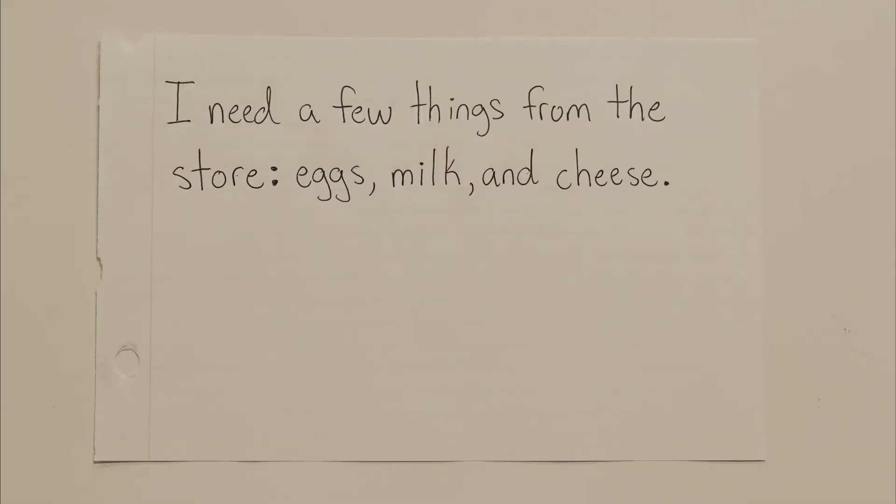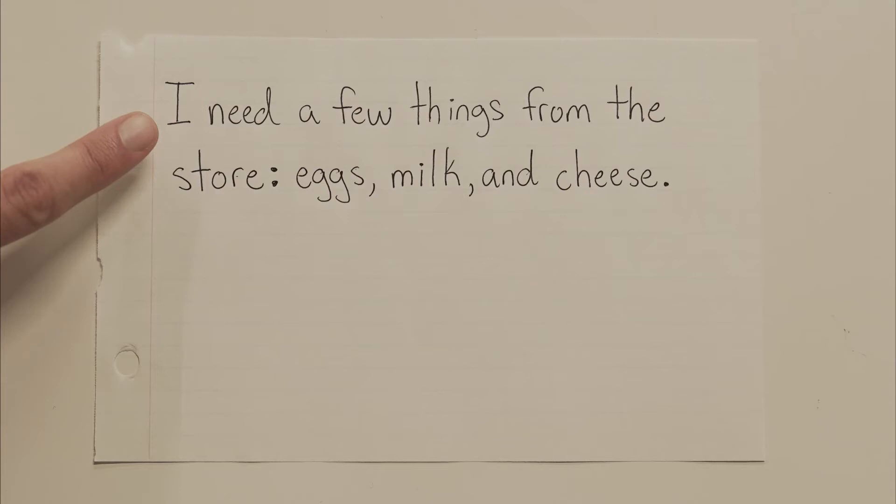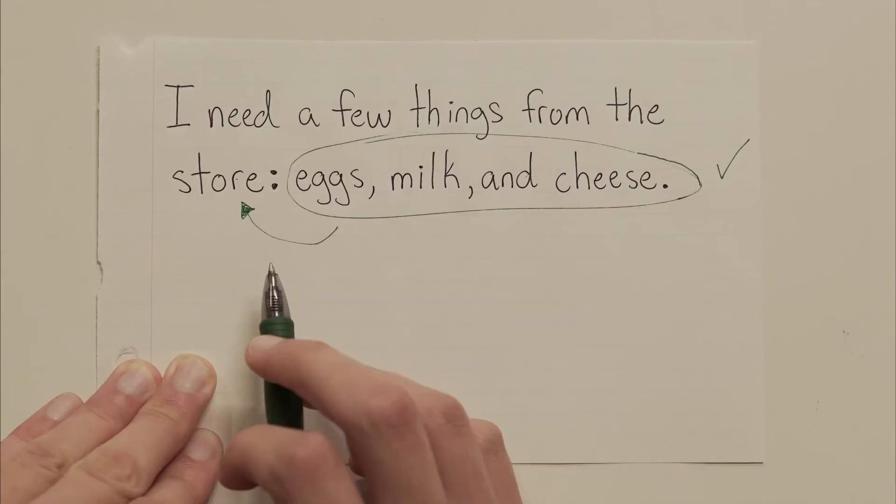I need a few things from the store: eggs, milk, and cheese. So this would be a proper use of a colon. Let's see why. Well, first, there's a full sentence before the colon. And second, after the colon, there's some extra information about the stuff before the colon. Eggs, milk, and cheese give me extra information about what exactly I need to get from the store.